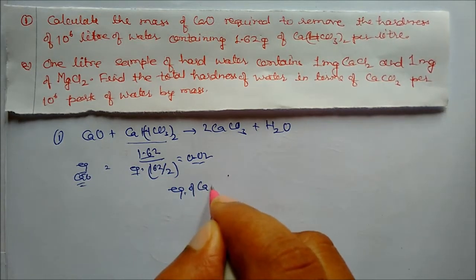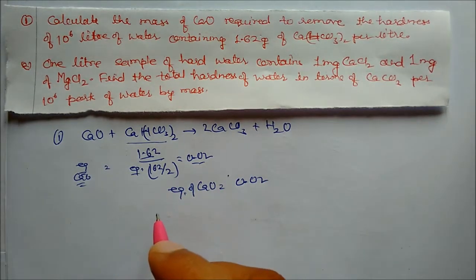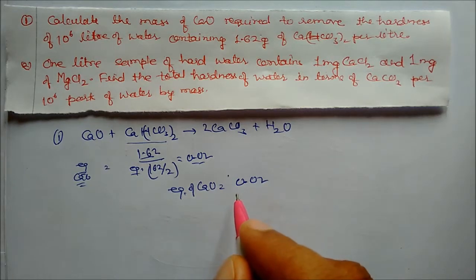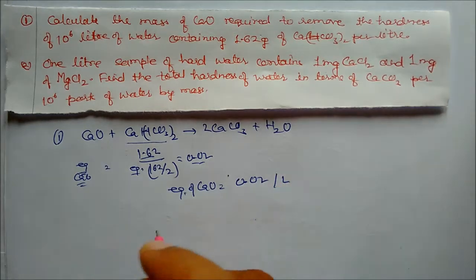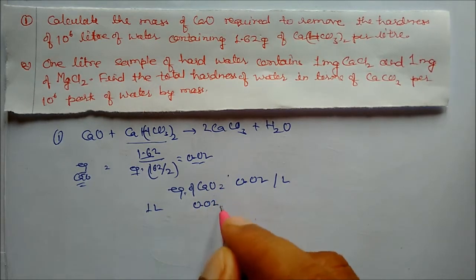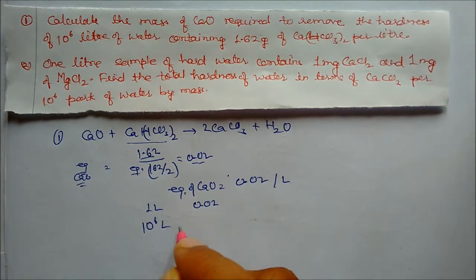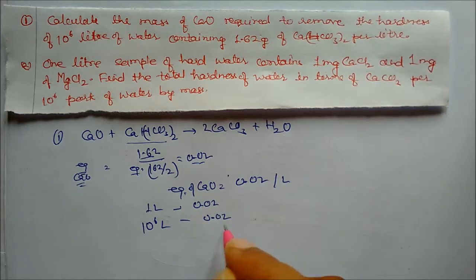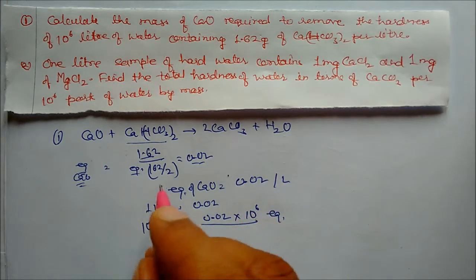In one liter we require 0.02 equivalents of calcium oxide — that is 0.02 per liter. We have 10⁶ liters, so for 10⁶ liters we require 0.02 × 10⁶ equivalents of calcium oxide.